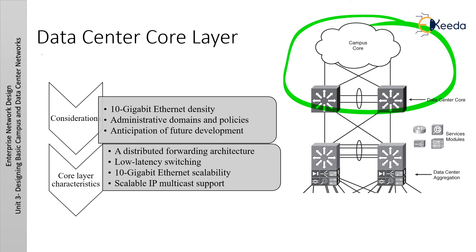Implementing a data center core layer is best practice for large data centers. Considerations include 10 Gigabit Ethernet density, administrative domain and policies, and anticipation of future deployment. Regarding 10 Gigabit Ethernet density: without a data center core, will there be enough 10 Gigabit Ethernet ports on the campus core to support both the campus building distribution layer and the data center aggregation layer?